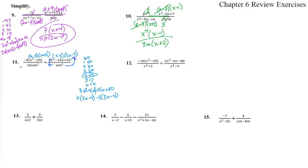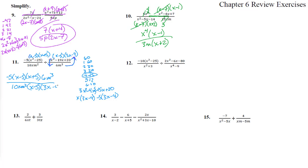Writing everything out: we have negative 5 times x minus 5 times x plus 5 over 10x m squared, times 6m cubed on top over x minus 5 times 3x minus 4.